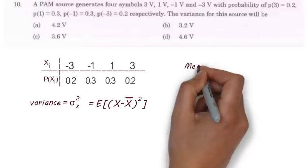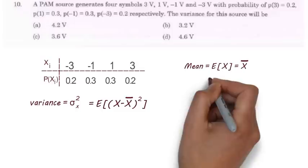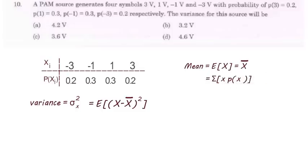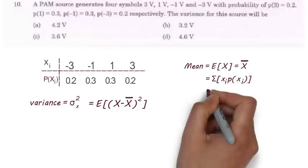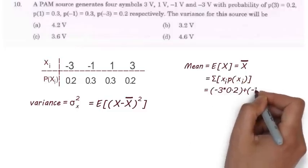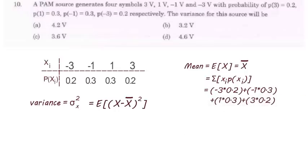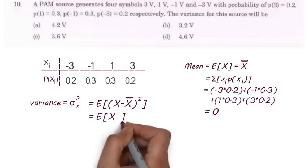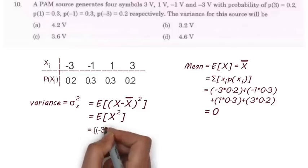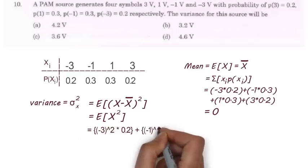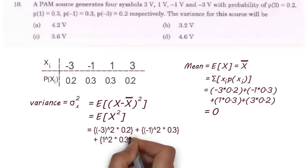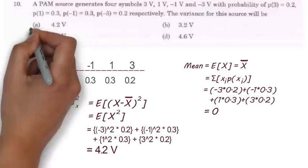As we know mean equal to expectation of x and that is equal to summation of xi into pxi. So it will be equal to minus 3 into 0.2 plus minus 1 into 0.3 plus 1 into 0.3 plus 3 into 0.2 and that will become 0. So option A is the right option.